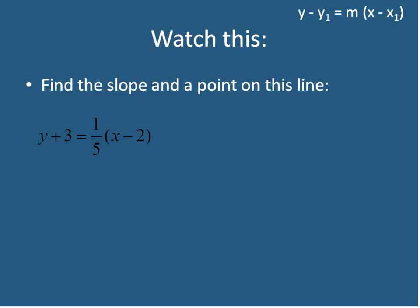So if we're given the equation y plus 3 equals 1 fifth of x minus 2, what is the slope and the point that's on this line? Well, we know that the slope is labeled by the letter m. So our slope, in this case, is 1 fifth. We can label that: slope equals 1 fifth.